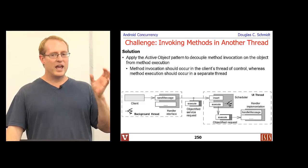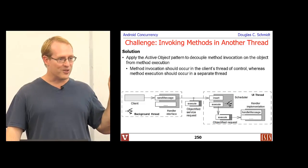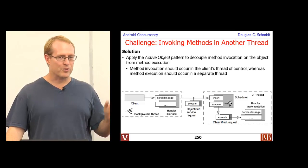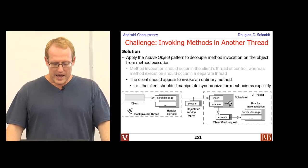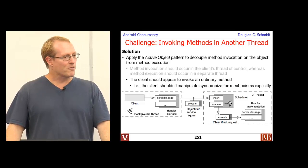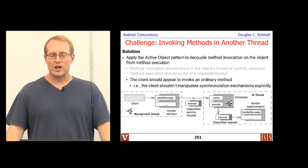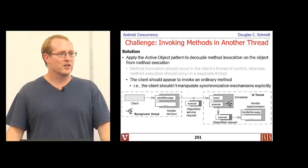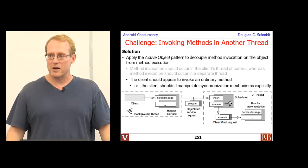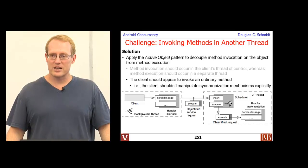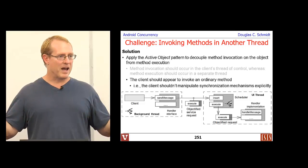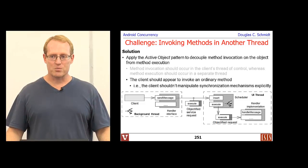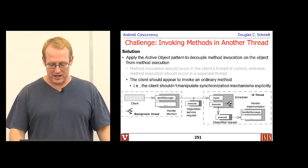We use the active object pattern to decouple the thread that invokes a method from the thread that runs the method — we're decoupling method invocation from method execution. Method invocation occurs in the client or caller thread, and method execution occurs in some other thread. However, from a client's point of view, this should look like just a regular method invocation — you're just invoking a method and the work gets processed in another thread of control.